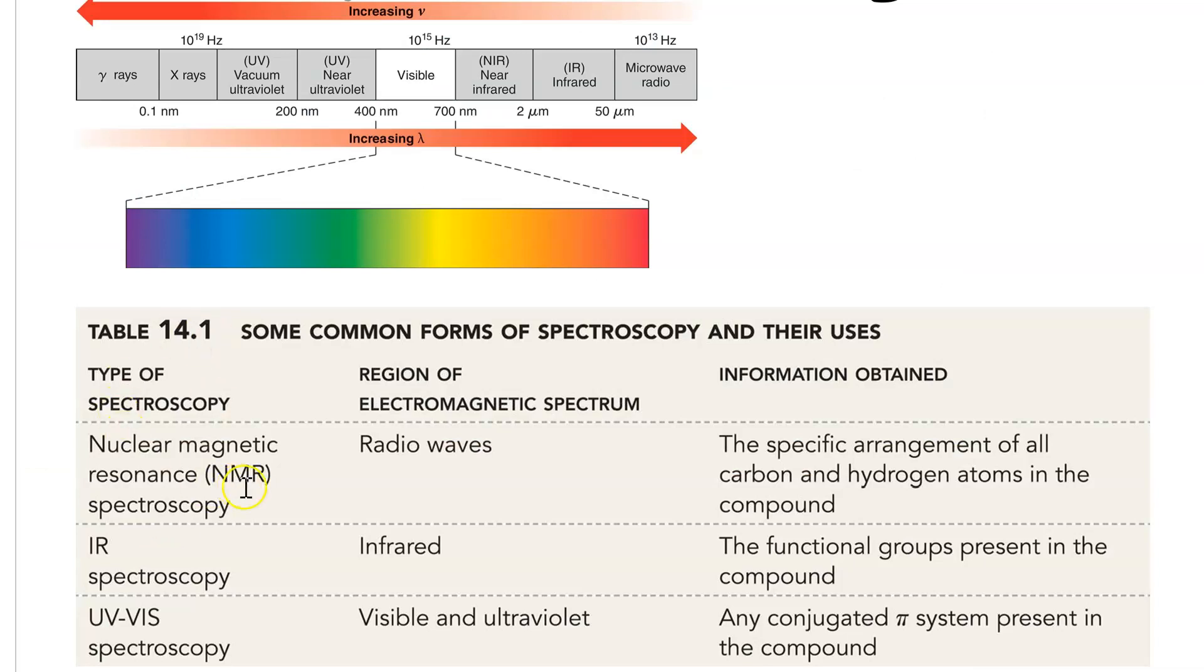We use different regions of the spectrum to get different information about molecules. For instance, NMR uses radio waves way down here at the low energy region of the spectrum. This tells us the specific arrangement of carbon and hydrogen atoms in a compound. There are advanced uses for NMR too that can give us more sophisticated analysis.